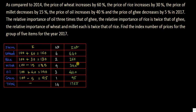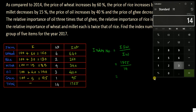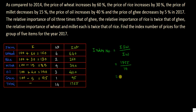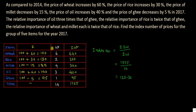Now find the index number of 2017. Index number equals sigma IW divided by sigma W, which is 1755 divided by 14. This gives us 125.36. The answer is 125.36.